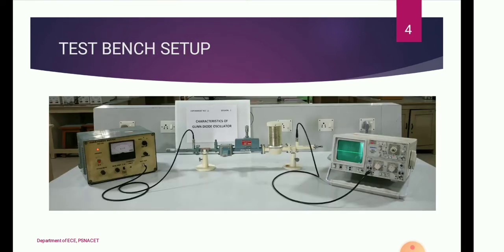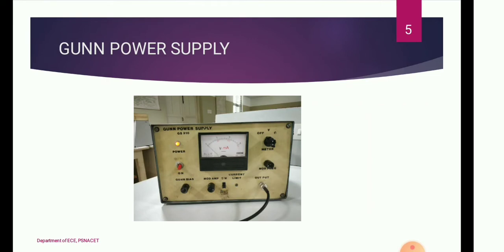The test bench setup, arranged from the left, includes the Gun Power Supply, Gun Oscillator, Isolator, Attenuator, Frequency Meter, and Diode Detector. The Diode Detector output is given to the CRO. Let's see each one by one.